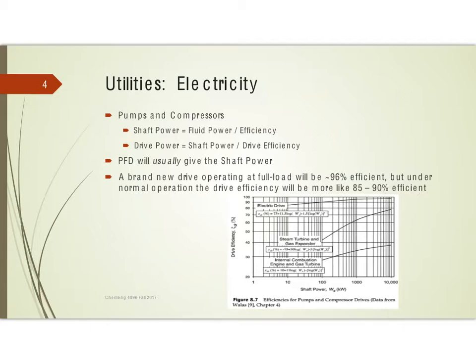We can usually get efficiency data from talking to manufacturers or using information from a website for the equipment we purchased. This graph shows drive efficiency on the vertical axis and shaft power on the horizontal axis for various sorts of drives — an electric drive, steam, a gas expander, an internal combustion engine, or a gas turbine — so you can get some pretty good estimates. Most of the time we use electric drives, but if you have a lot of extra steam in your plant you may choose a steam drive, which will be less efficient but since it's material you already have, it's essentially free.